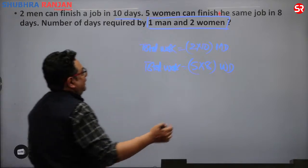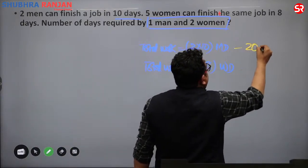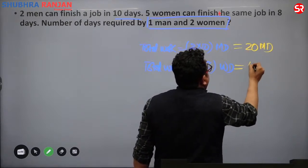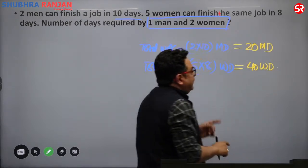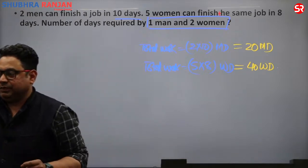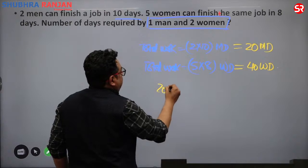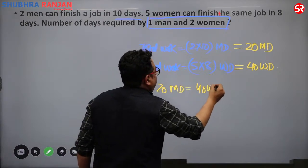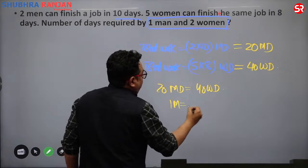Total work is either equal to 20 man days or equal to 40 women days. This gives the comparison: 20 man days equals 40 women days, which means 1 man equals 2 women.